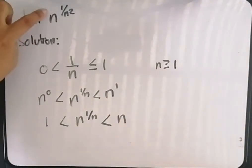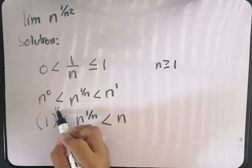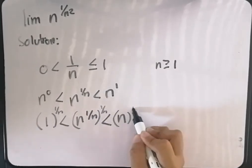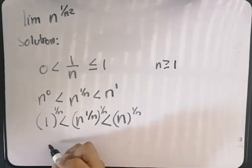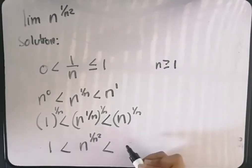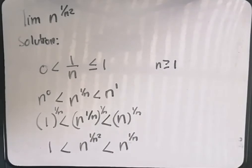Pero ang hinahanap natin is n raised to 1 over n squared. So if we raise everything by 1 over n, this becomes now 1, this becomes 1 over n squared, and this becomes n raised to 1 over n.